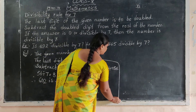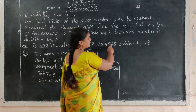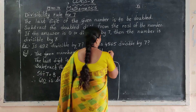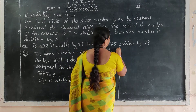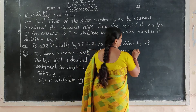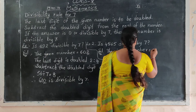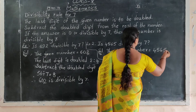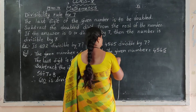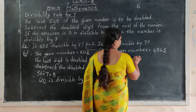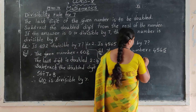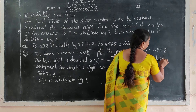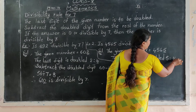Another example. Is 4565 divisible by 7? Given number: 4565. The last digit is 5. Double it: 5 plus 5 equals 10.